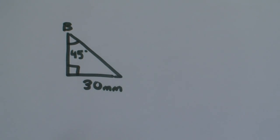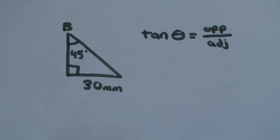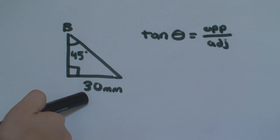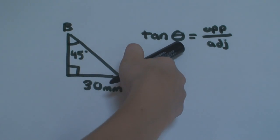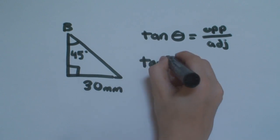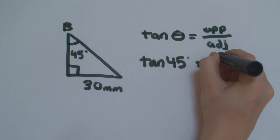We'll be using the tangent function like this. We know that angle B is 45 degrees, and we know that the opposite side is 30 millimeters. What we're trying to find is the adjacent side. So, we'll fill in theta for 45 degrees, and the opposite for 30.